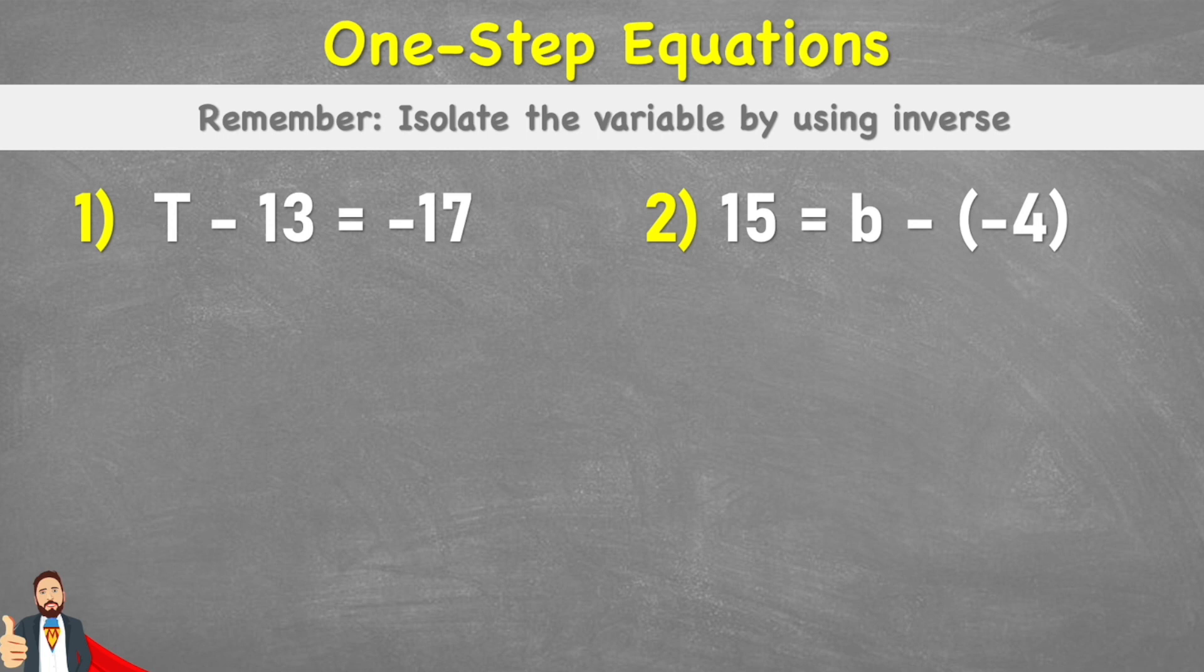Okay, so we can see that we have two examples here that we're going to look at today. And we can see that both of them involve variables, as in an unknown value, and negative numbers, as well as subtraction.